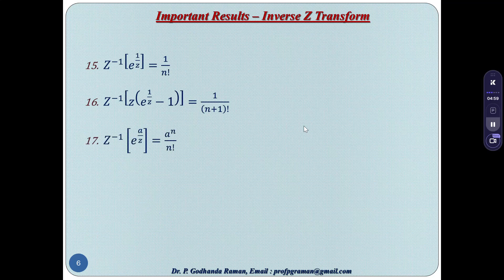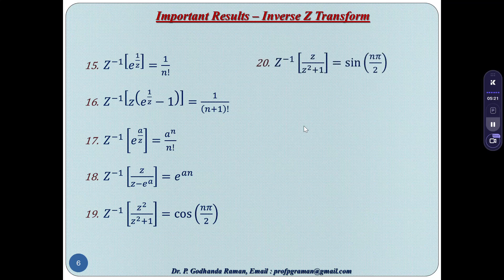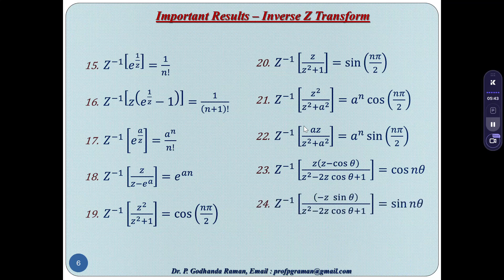More inverse Z-transform results: Z⁻¹{e^(1/z)} = 1/n!. Z⁻¹{z·(e^(1/z)−1)} = 1/(n+1)!. Z⁻¹{e^(a/z)} = a^n/n!. Z⁻¹{z/(z−e^a)} = e^(an). Z⁻¹{z²/(z²+1)} = cos(nπ/2). Z⁻¹{z/(z²+1)} = sin(nπ/2). Z⁻¹{z²/(z²+a²)} = a^n·cos(nπ/2). Z⁻¹{az/(z²+a²)} = a^n·sin(nπ/2). Z⁻¹{z(z−cosθ)/(z²−2z·cosθ+1)} = cos(nθ). Z⁻¹{z·sinθ/(z²−2z·cosθ+1)} = sin(nθ).